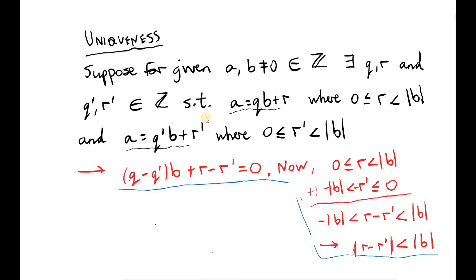So we've shown that for any integers a and b where b is non-zero, we can write a as qb plus r, where r is non-negative and less than the magnitude of b. Next, we need to show that q and r are unique.